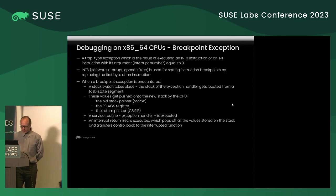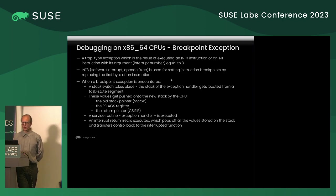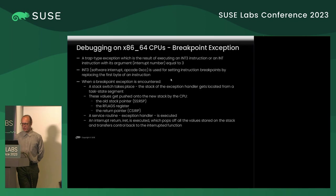On x86 the breakpoint is usually an int3 instruction — you replace just the first byte. This breakpoint exception switches the stack, writes the old stack pointer, the RFLAGS register, and the return pointer onto the new stack, and a service routine (exception handler) is executed. Typically this exception handler stores the values of all registers, thus creating the pointer to the ptregs structure. Upon returning, the iret instruction is executed, values are popped off the stack, and a stack switch occurs again.